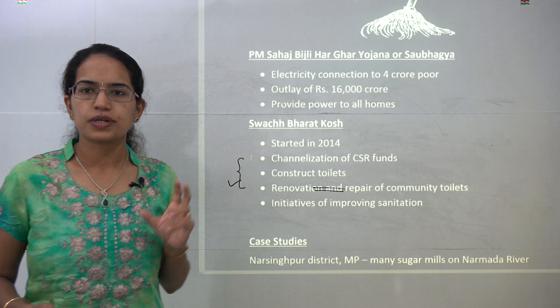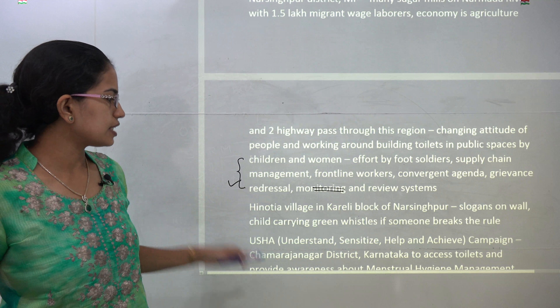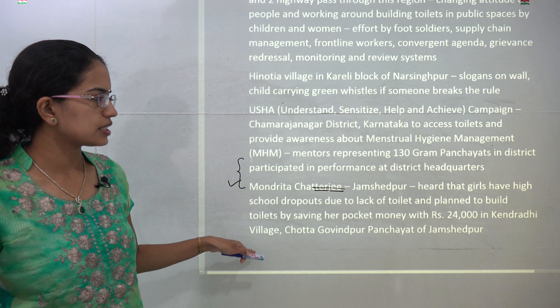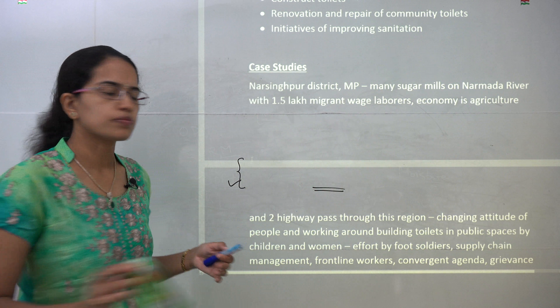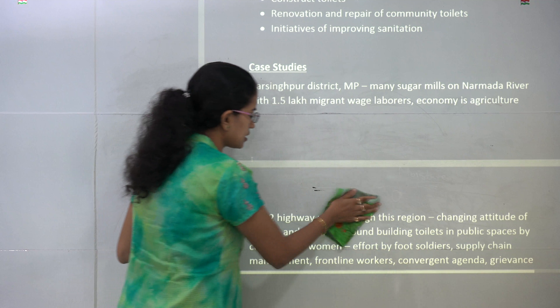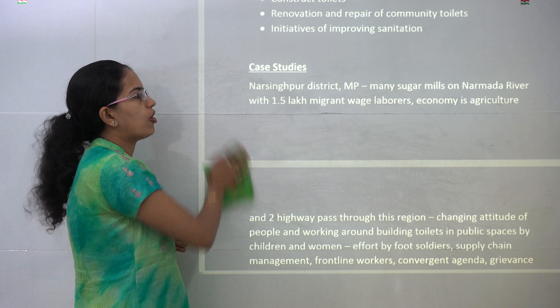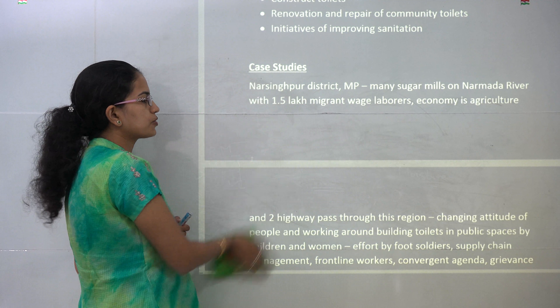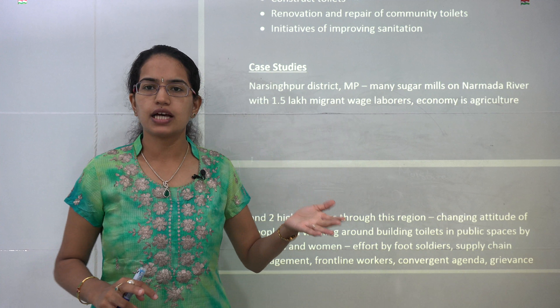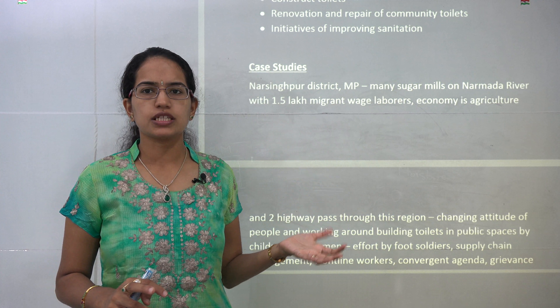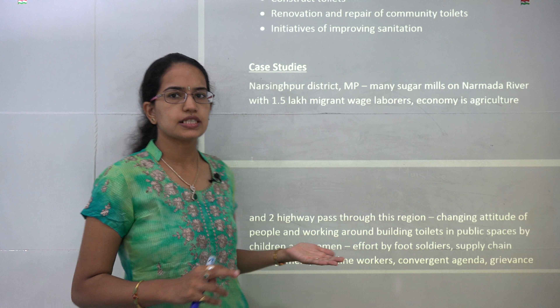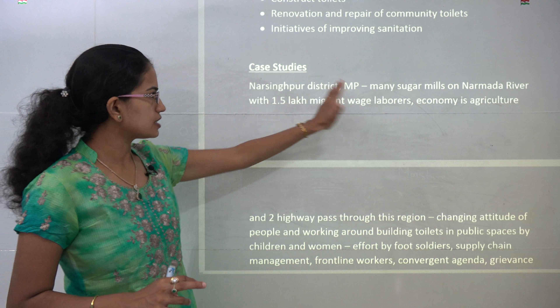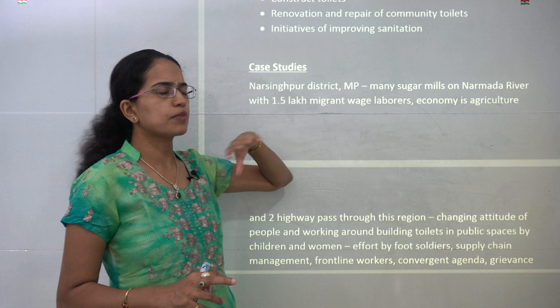An important excerpt is the Swabhagya scheme — Prime Minister Sahaj Bijli Har Ghar Yojana. The issue was that electricity poles were present near villages but electricity was still not reaching homes. To address this, the Swabhagya scheme was started to provide electricity connections to 4 crore poor people and provide power to all homes.